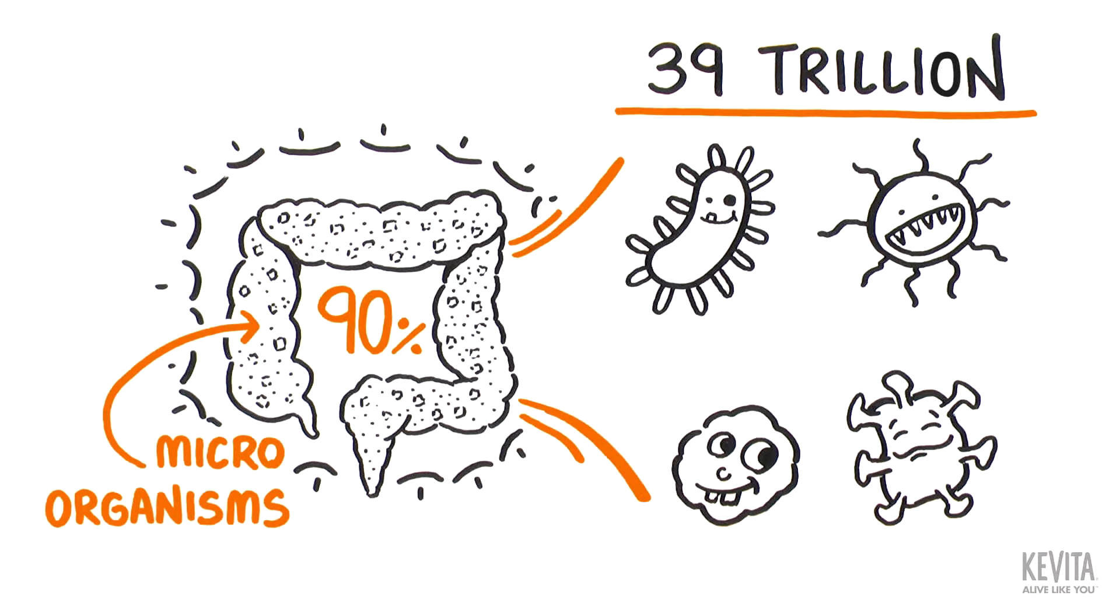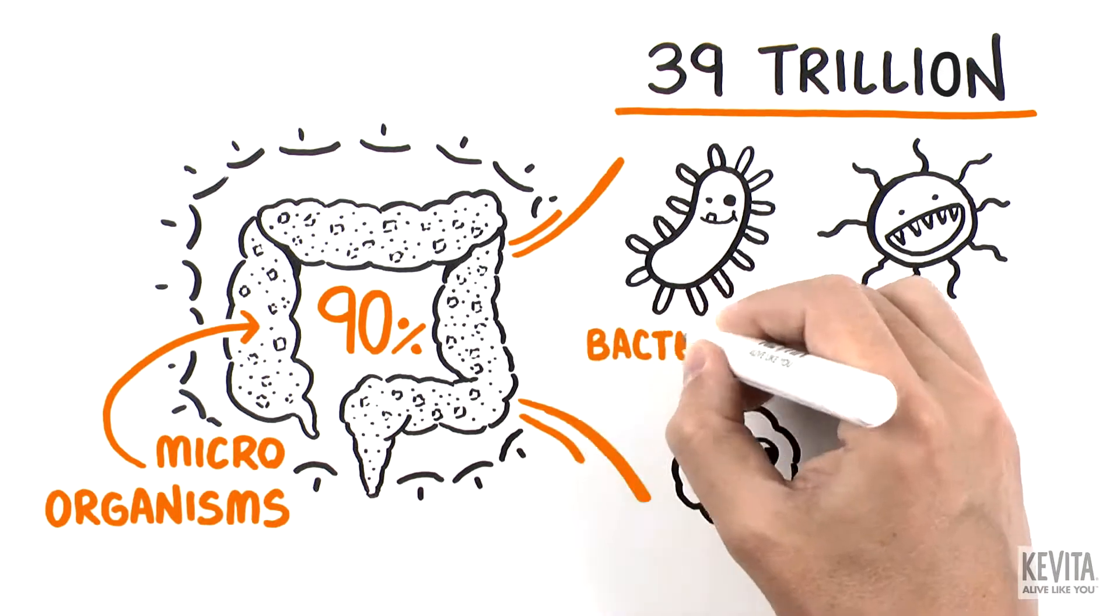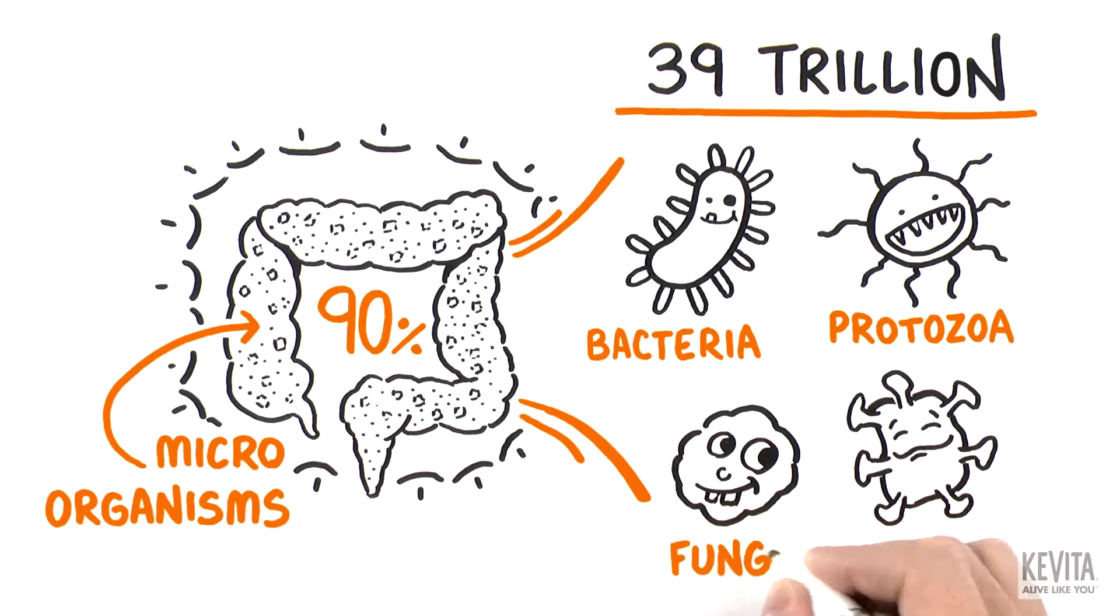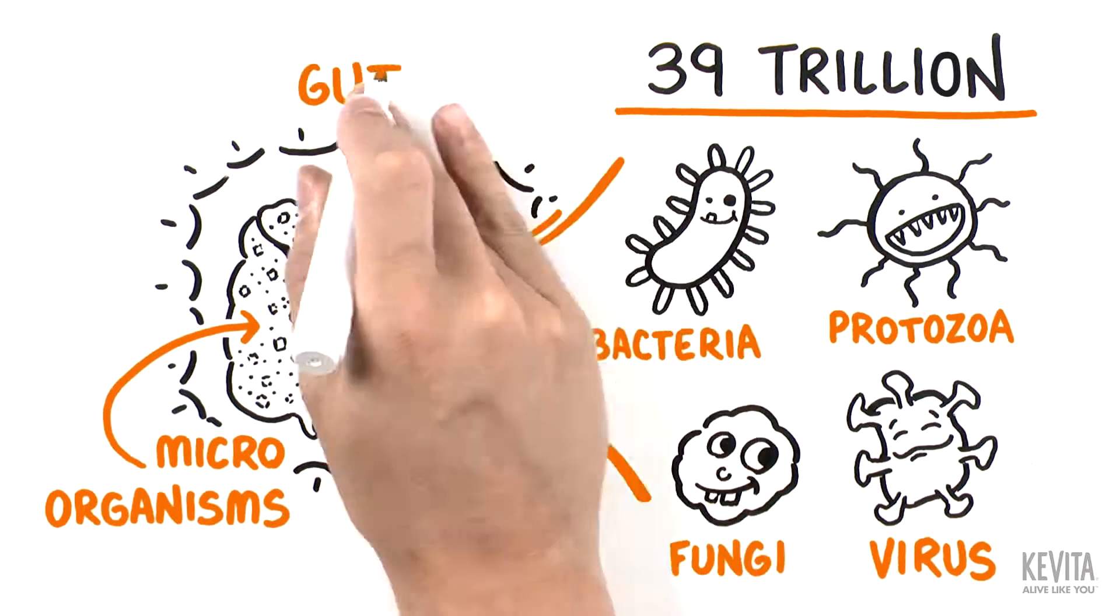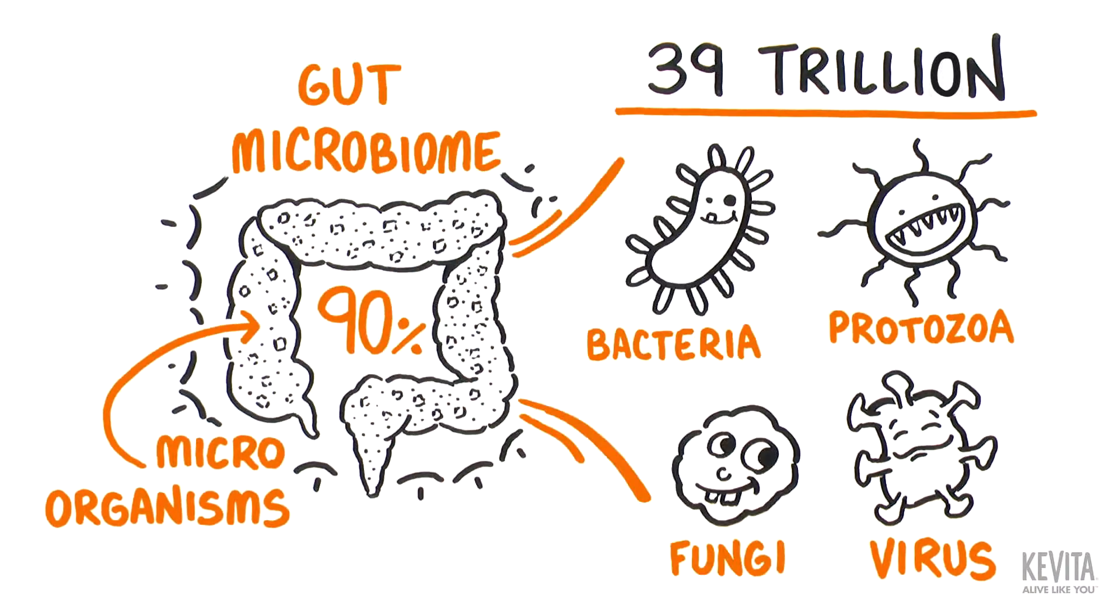These microorganisms, comprised of bacteria, protozoa, fungi, and viruses that live in the digestive tract, are collectively known as the gut microbiome.